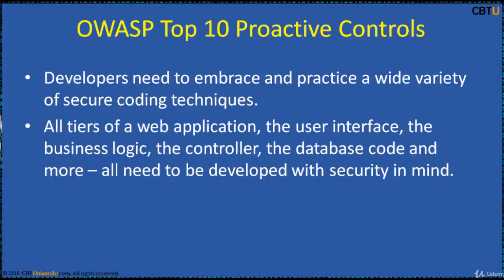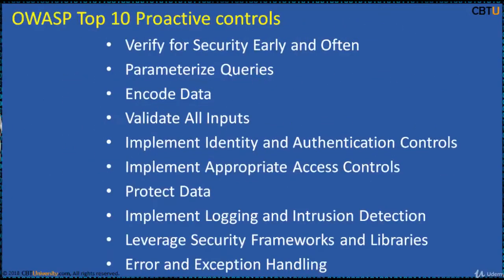Developers need to embrace and practice a wide variety of secure coding techniques. All the types of a web application — the user interface, the business logic, the controller, and the database code and more — all need to be developed with security in mind. OWASP Top 10 Proactive Controls helps in this. It is a list of security techniques that should be included in every software development project, ordered by importance with control number one being the most important. This document was written by developers for developers to assist those new to secure development.